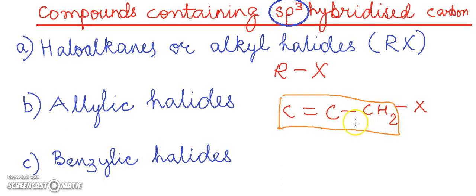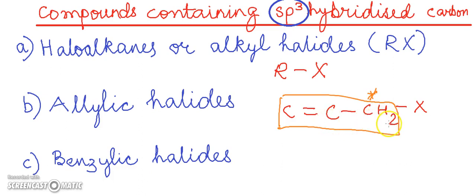The carbon atom next to the carbon-carbon double bond is the allylic carbon. Therefore, these halides are called allylic halides. The third classification for compounds containing the sp3 hybridized carbon atom is the benzylic halides.